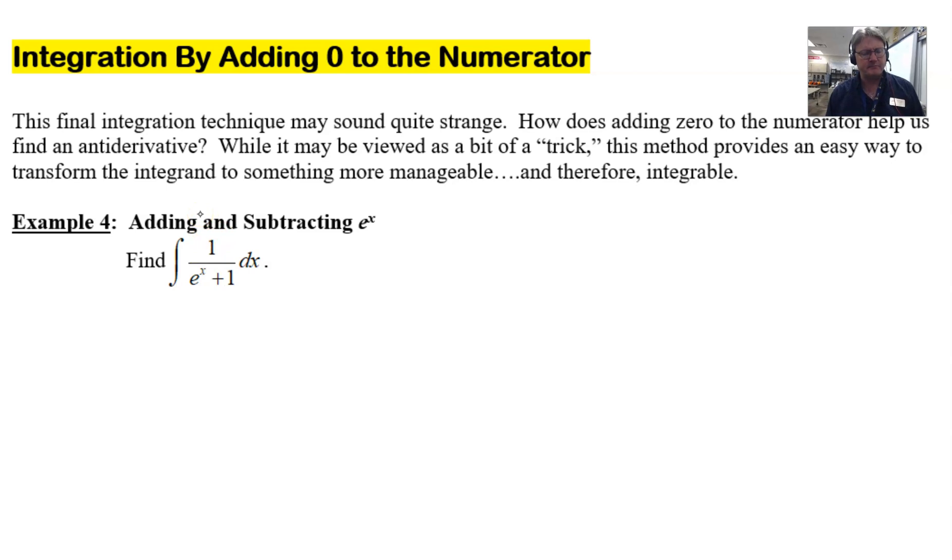But we can't just go around multiplying the top by e^x and multiplying the bottom by e^x because that's going to give us a completely different denominator. Instead, let's think about it this way.